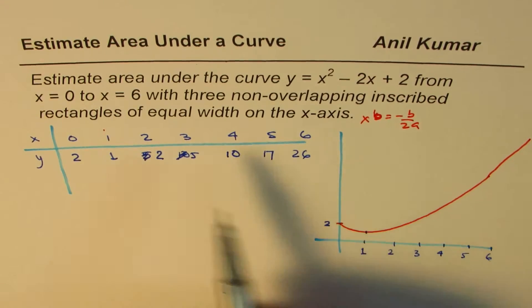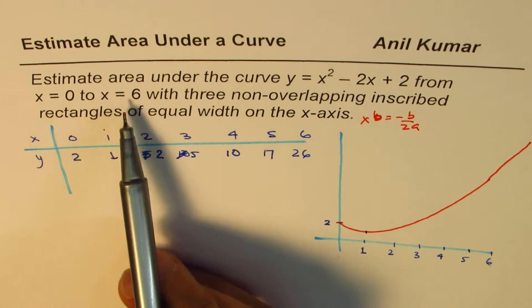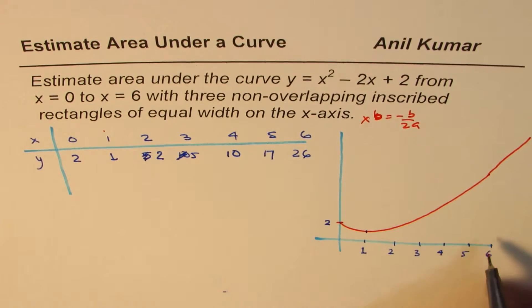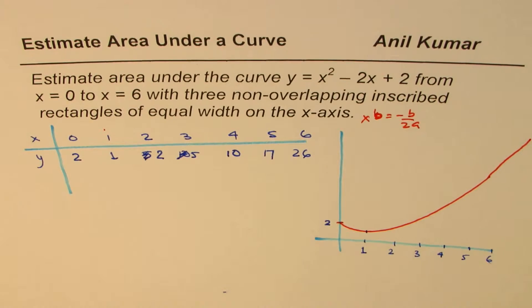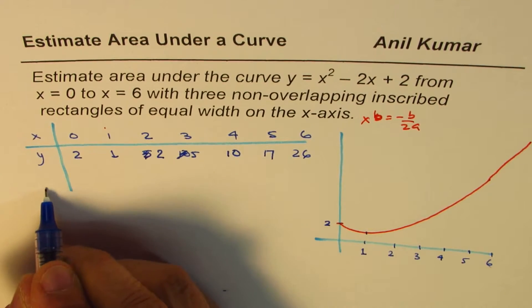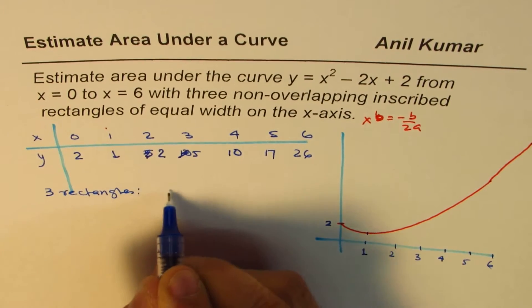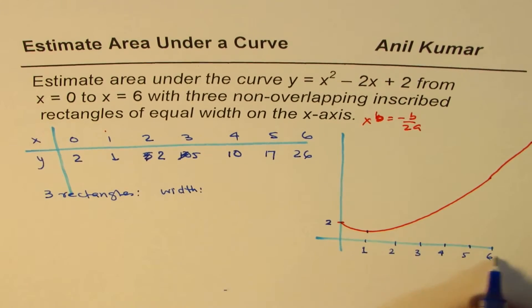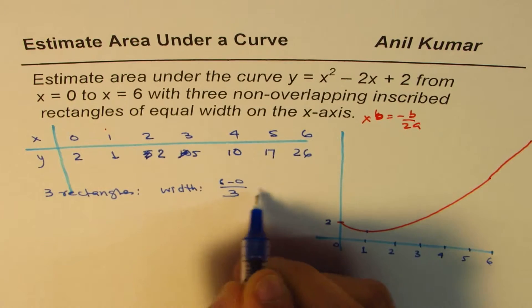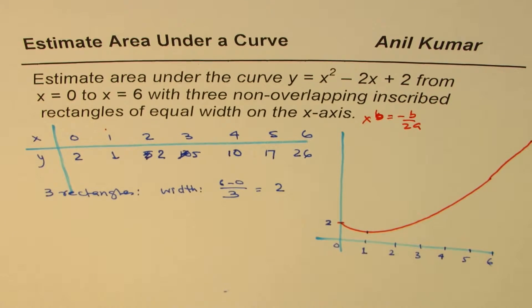Now the question is, estimate area under this curve from x equals to 0 to 6 with 3 non-overlapping inscribed rectangles. So we have to make 3 rectangles. Since we have to make 3 rectangles, then width should be 6 minus 0 divided by 3. So we have 2 as the width.